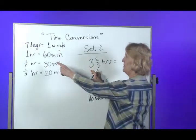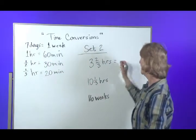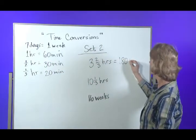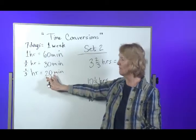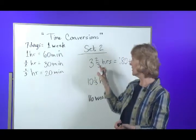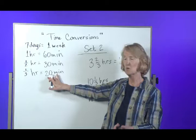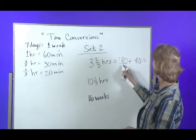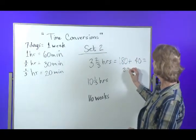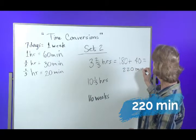Well, three hours would be three of these, so that'd be 180 minutes. And then one-third of an hour is 20 minutes, so two-thirds of an hour would be twice as big, so 40 minutes. So 180 and 40 is 220 minutes.